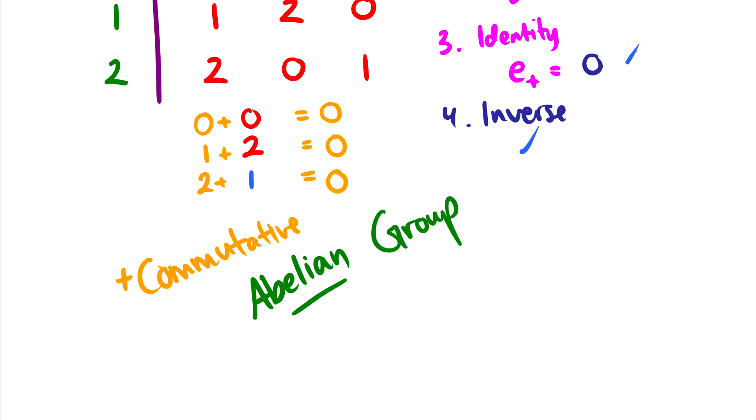So abelian here just means commutative. We don't say commutative groups, we say abelian groups, of course, contributing to the person who discovered this. Historical note, not really important, but that's a terminology you should know. Abelian just means it's commutative as well.